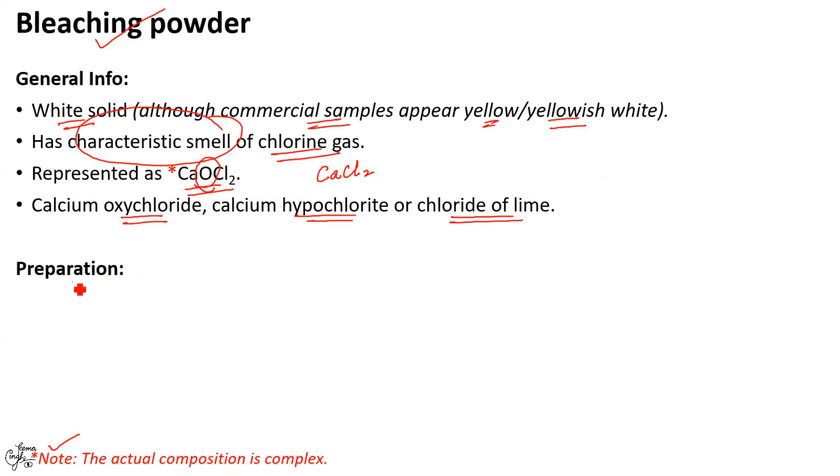Coming on to its preparation, chlorine gas produced in the chlor-alkali process that we studied earlier acts on dry slaked lime which is calcium hydroxide to give rise to bleaching powder and water as the products.